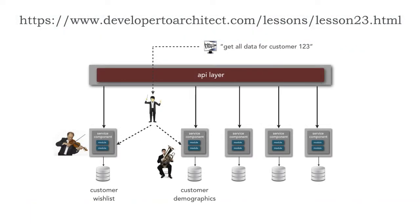In lesson 23, we talked about the differences between orchestration and choreography, and we saw with orchestration it was almost like an orchestra where we've got different players doing their own thing — for example, the violin and the baritone — and the request 'get all data for customer one, two, three' requires an orchestration to get all the information across multiple microservices. We talked about the need of some sort of conductor in front of that orchestra. That's the orchestrator.